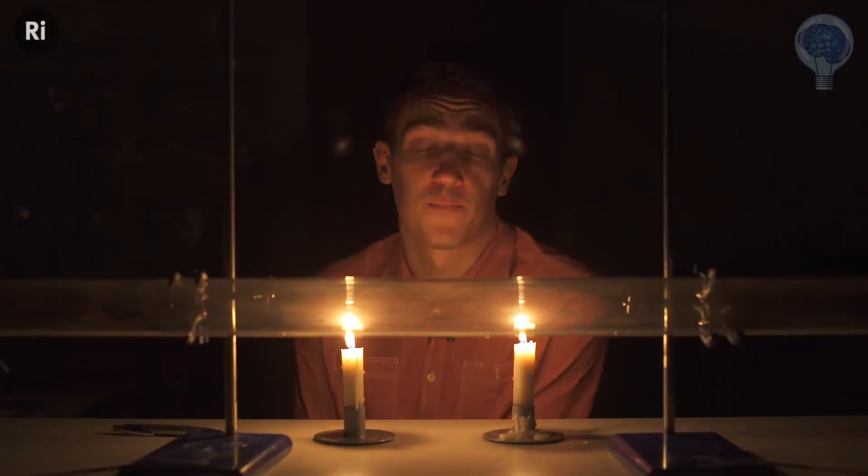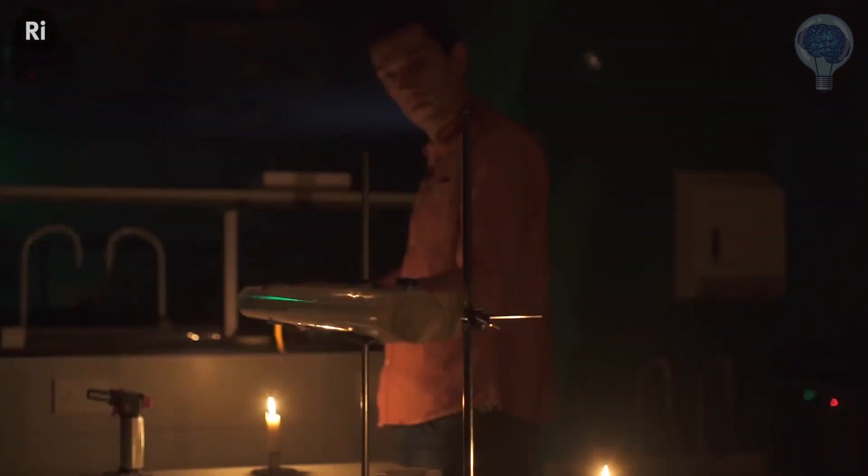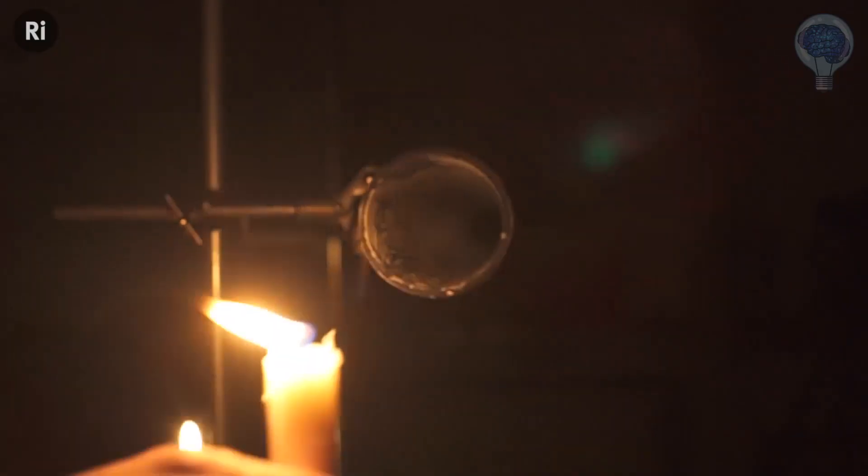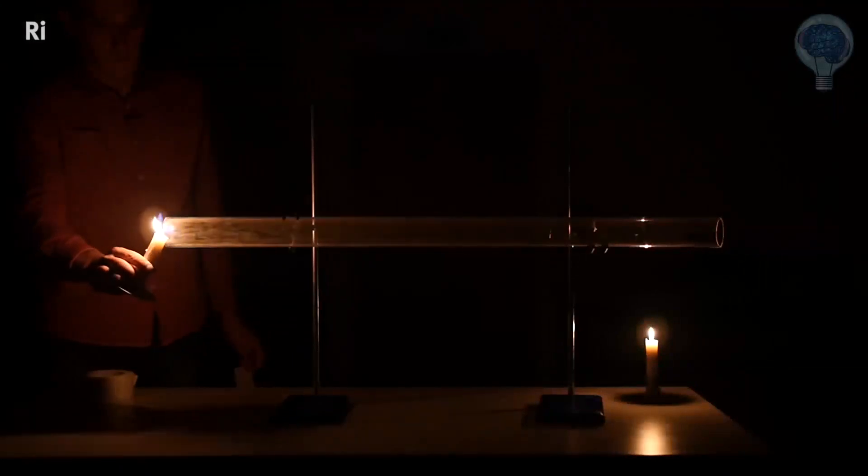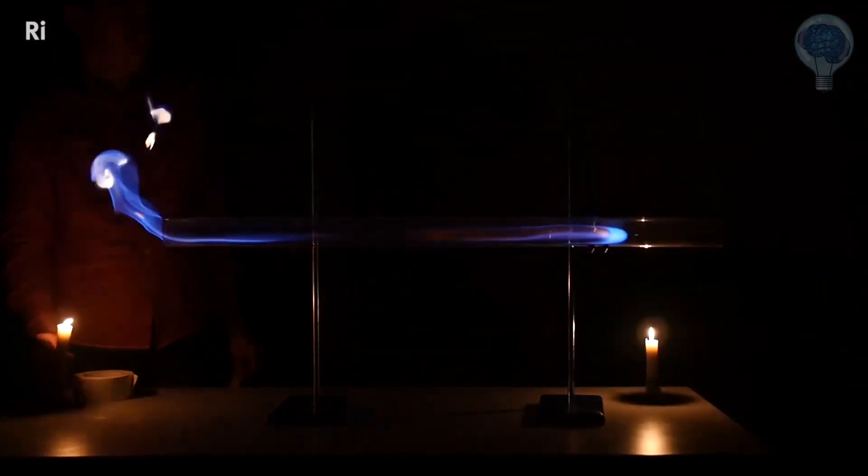So, how does a Davy lamp work? Well to give you an idea, I filled this tube with natural gas, which is mainly methane and similar in composition to fire damp. Now if I ignite it at one end, you can see that the flame front propagates along the tube in quite a spectacular way.